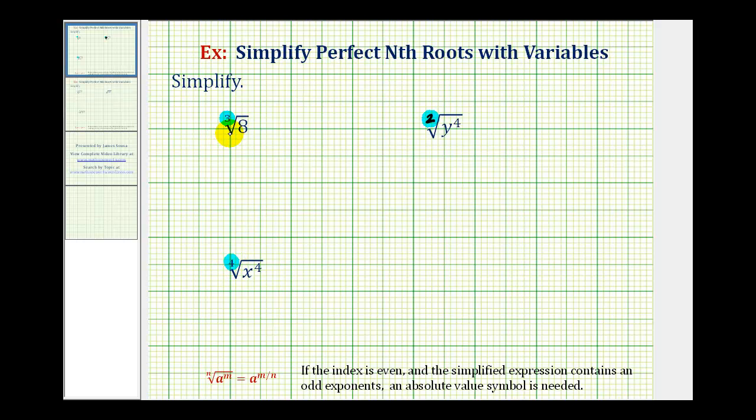The reason the index is so important is a radical reverses the operation of raising a number to a power. So to simplify the cube root of eight, we need to ask ourselves what number to the third power would be equal to eight. So if we can just think of that and know the number is two, we're done. The cube root of eight is equal to two. But if we can't, let's talk about a process for simplifying the cube root of eight.